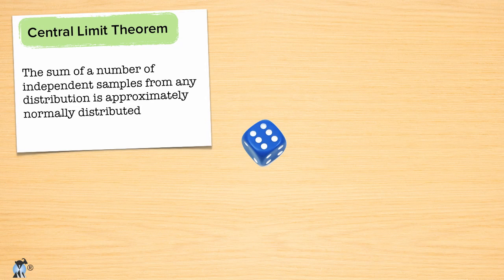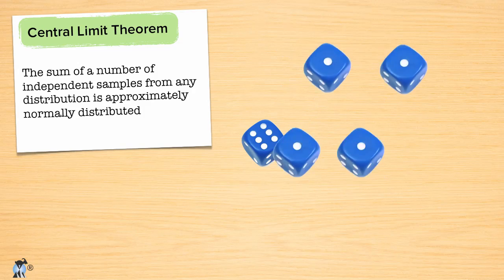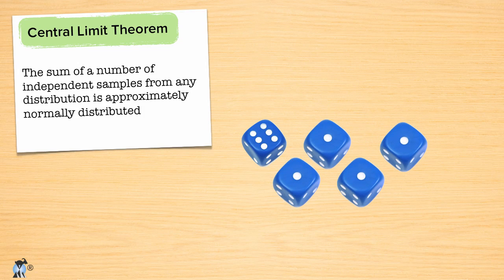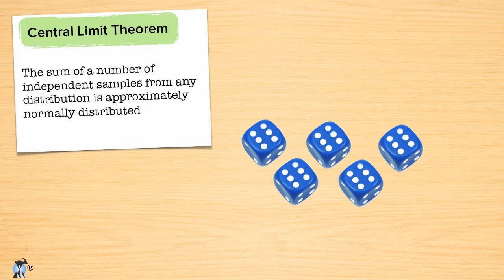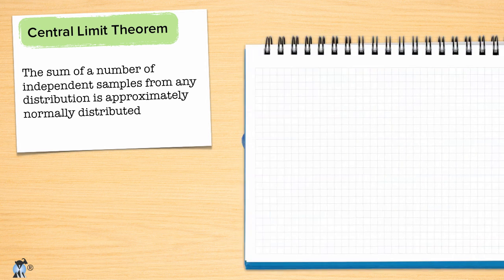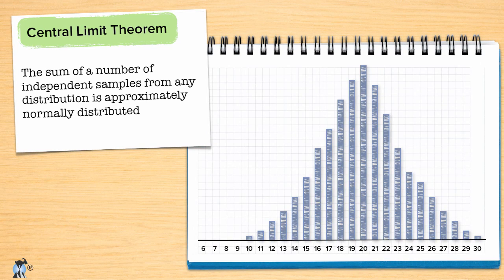Suppose one of our dice always rolls a six. The other four dice all roll normally, but this one die is loaded and always rolls six. Now, the lowest roll we can get is ten — we'd get that if the four fair dice all come up with ones and the loaded die is, of course, six. The highest roll we can get is still thirty, since each of the five dice can still show six. Here are the results of simulating these dice 7,500 times.